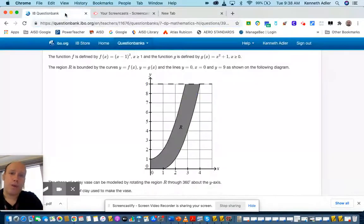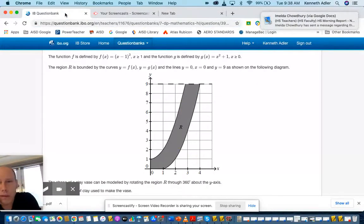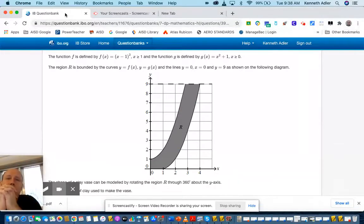Let's go to the question first. The function f is defined by f(x) equals (x-1) squared, x is greater than 1, and the function g is defined by g(x) equals x squared plus 1, x is greater than 0. The region R is bounded by the curves y equals f(x), y equals g(x), and the lines y equals 0, x equals 0, and y equals 9, as shown in the diagram.